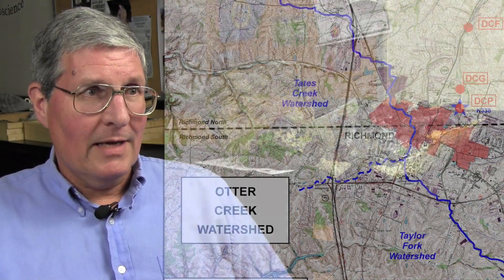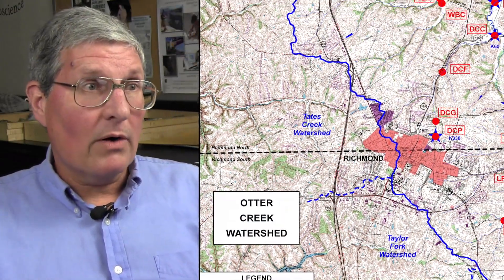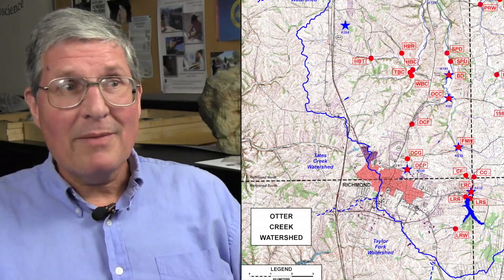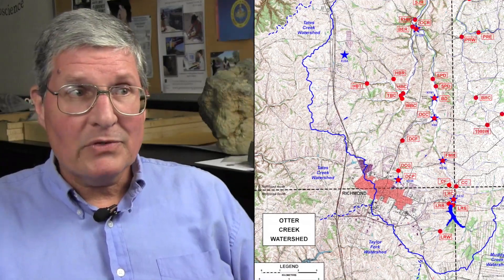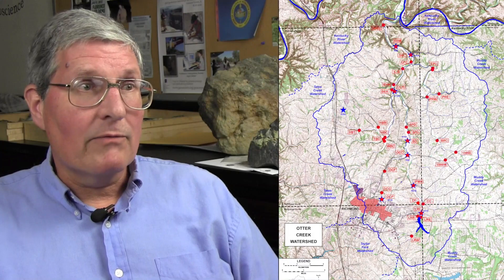IMI students are presently investigating the Otter Creek Watershed. The Otter Creek Watershed has its headwaters in Richmond; however, only about 5–10% of the entire watershed area is covered by the footprint of Richmond. The rest of the area is rural in character.